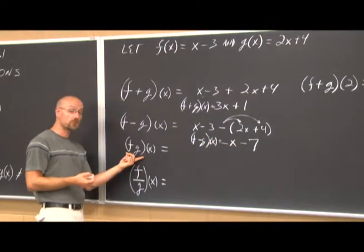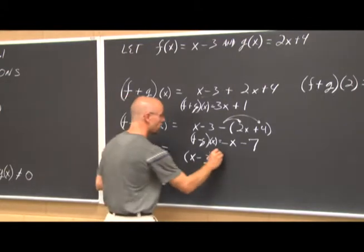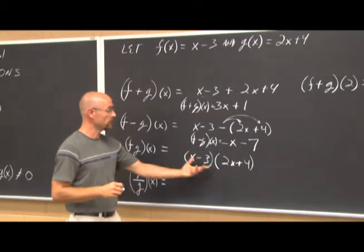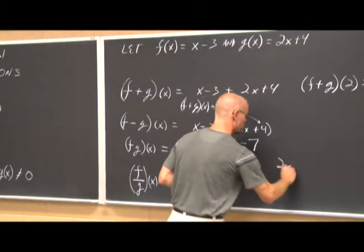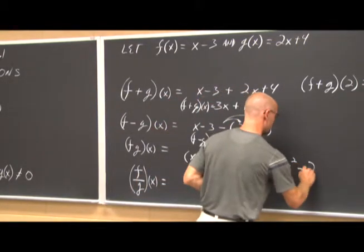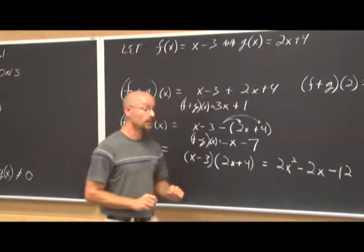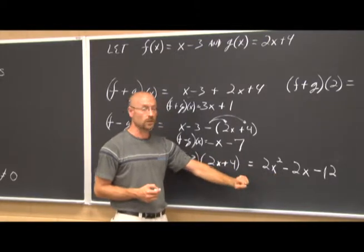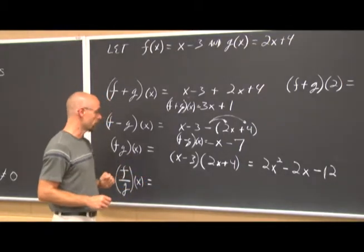For f times g of x, we take f of x and multiply it by g of x. Because these are binomials, we use FOIL: x times 2x is 2x squared, and then we have negative 6x and positive 4x for negative 2x, and negative 3 times 4 is negative 12. We end up with 2x squared minus 2x minus 12, a nonlinear function. Because both original functions had domain of all real numbers, this product does too.